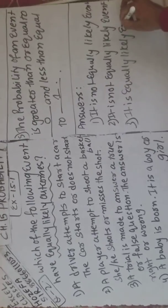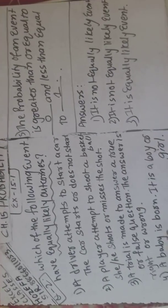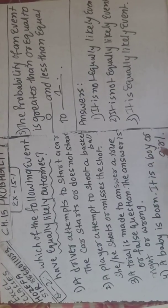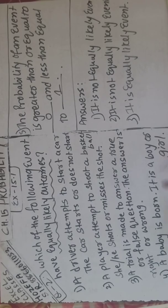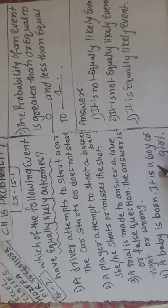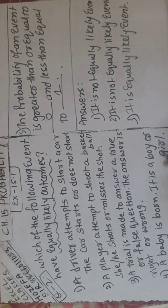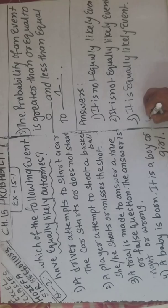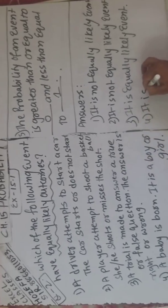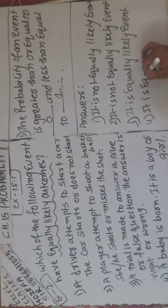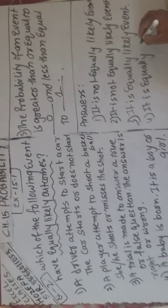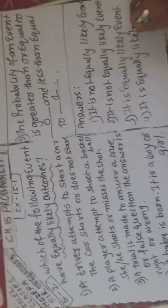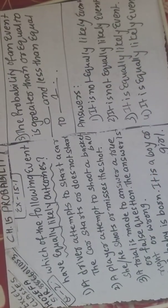And last: a baby is born — it is a boy or a girl. Ya toh boy hai ya toh girl — it is also an equally likely event, kyunki pehle se nahi bata sakte. Dono hone ke equal chance hain. That is equally likely.